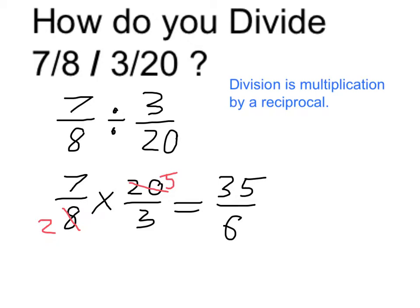I might want to convert that to a mixed number to get a little better idea of what exactly that is. Now, 6 goes into 35 not quite 6 times. It goes 5 full times, which would be 30. So it's 5.